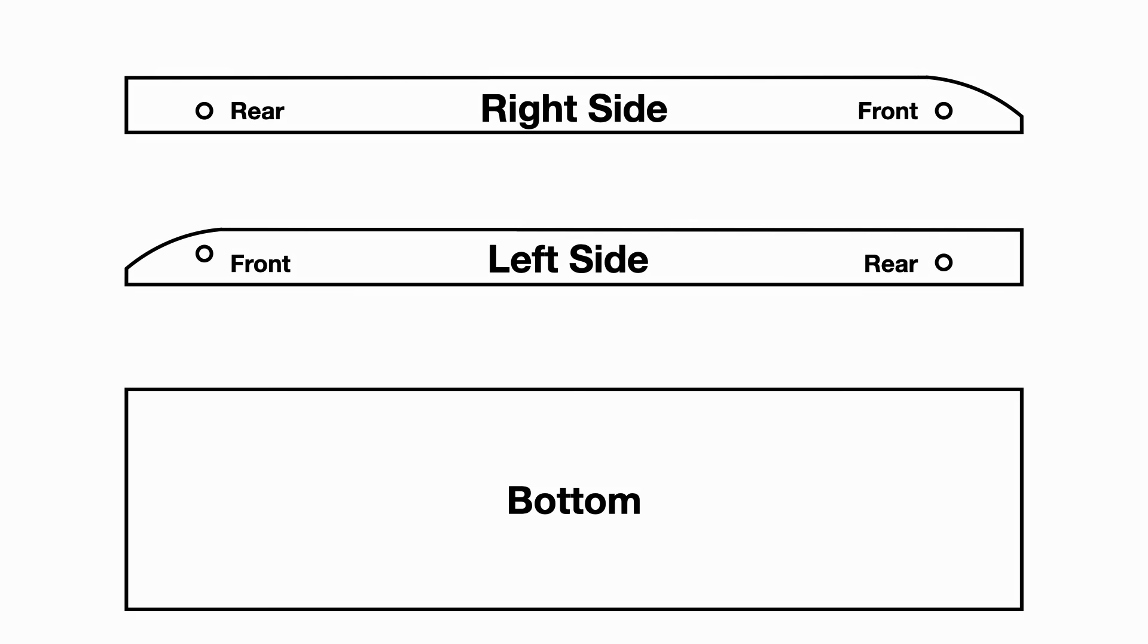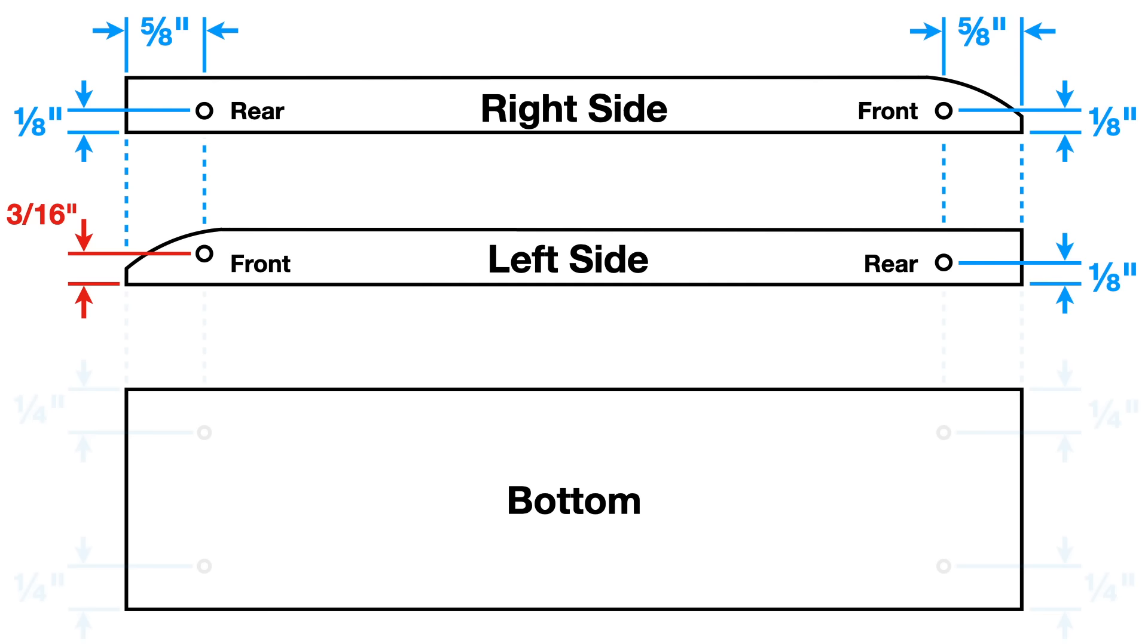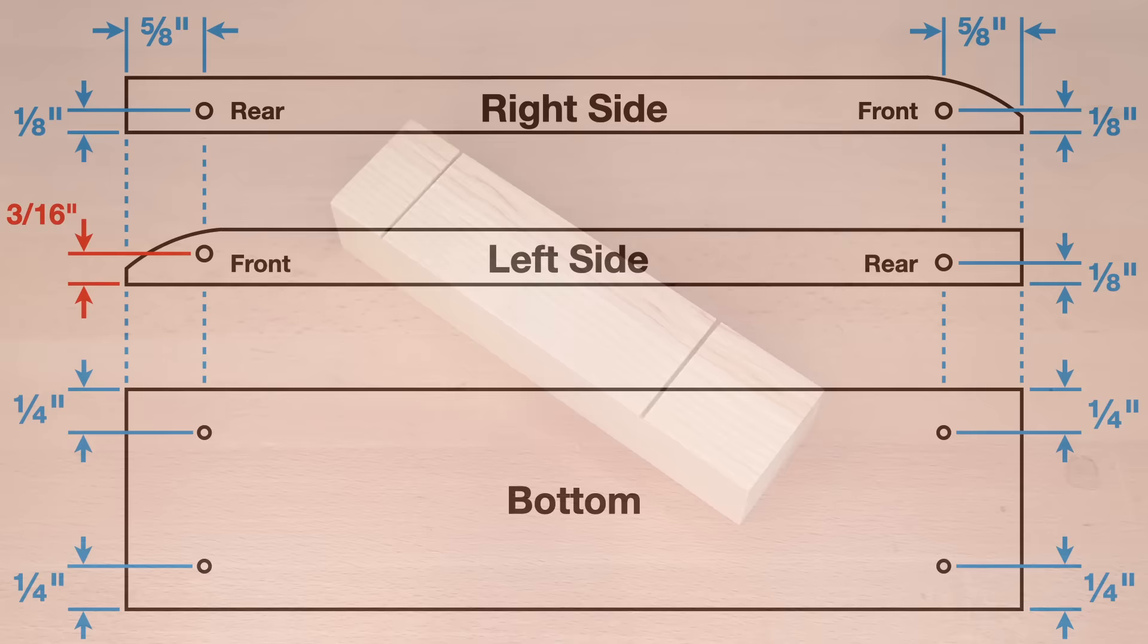The next step is to mark the location of all the holes you need to drill. The axle holes are located five-eighths of an inch from each end, and one-eighth of an inch above the bottom. Except for the left front axle hole, which is three-sixteenths of an inch above the bottom. On the bottom of the block, there are 4 holes over the axles, for gluing them in place.